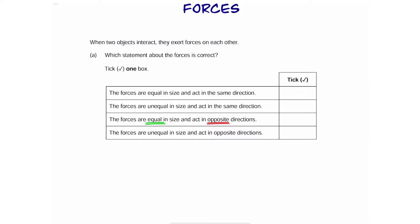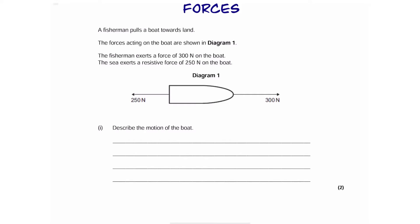Perfect. Part B. Okay, here's the next part. We have a boat and there is a force pulling it forward or to the right by a fisherman and that's 300 Newtons. And the water in the ocean is pulling it back by a force of 250 Newtons.